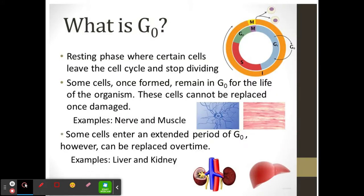Some cells don't actually go through all of interphase. After G1, they enter G0, a state where cells stop and don't divide — they just live their life. Many cells don't go through cell division, like nerve and muscle cells, which are not replaceable once damaged. G0 is simply a period of cell life without division.